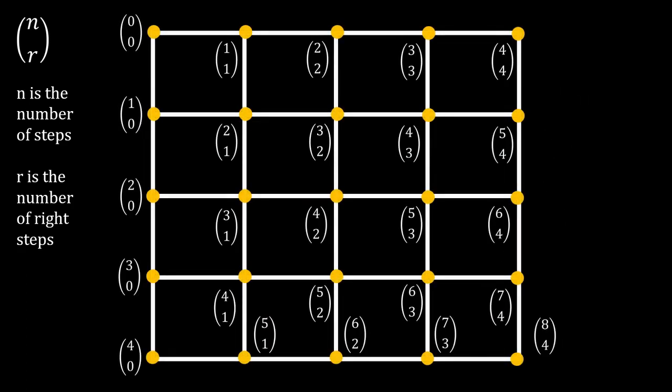Feel free to pause and think about what is going on here. What is fascinating about this is that we established that the number of paths for each point in the grid is actually the number in Pascal's triangle. So, what we see here is that Pascal's triangle can be written using these combinations.